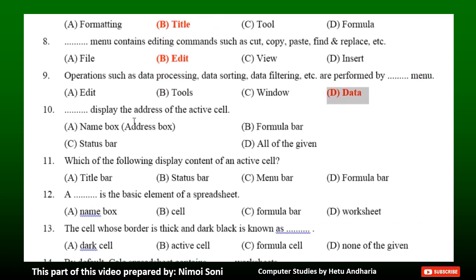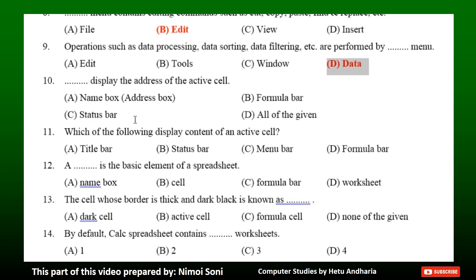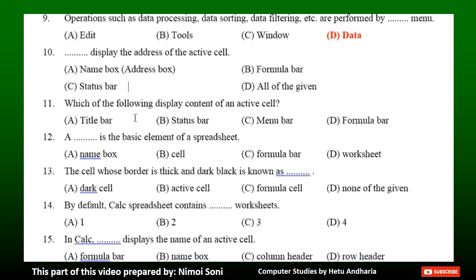Question 10: Dash displays the address of the active cell. Option A: Name box (i.e., address box). Option B: Formula bar. Option C: Status bar. Option D: All of the given. The correct answer is Option A — Name box, i.e., address box.